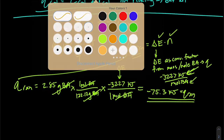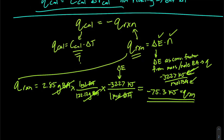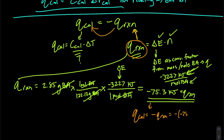Now we've identified Q_reaction, so we can use that to find Q_calorimeter. The Q_calorimeter is the opposite of Q_reaction — same magnitude, opposite sign. So it's negative of negative 75.3 kilojoules, meaning Q_calorimeter is positive 75.3 kilojoules. This makes sense because we originally observed the calorimeter gained energy as it increased in temperature.